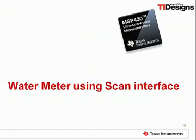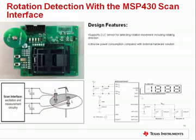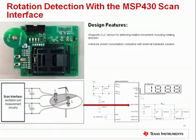The next TI design is the water meter using the scan interface. In battery-operated water meters, battery lifetime over several years is key. One of the challenges is to continuously measure water flow information while consuming as little energy as possible. The scan interface sensing peripheral integrated onto the ultra-low-power MSP430 microcontroller solves this problem. Coupled to an LC rotation detector sensor, the scan interface continuously detects the rotation of the propeller while the rest of the microcontroller sleeps in low-power mode.